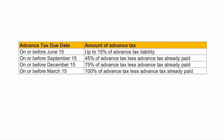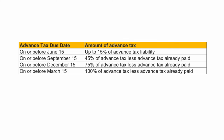The advance tax due dates are typically the 15th of the last month of every quarter. The first installment is due on June 15th, where you pay 15% of the advance tax liability. By September 15th, you pay 45% of the advance tax due. By December 15th, the third installment, you must clear 75% of your advance tax dues. By 15th March, the final installment, 100% of the advance tax must be deposited.